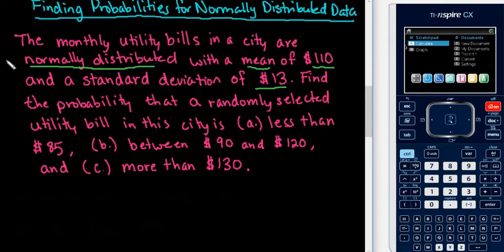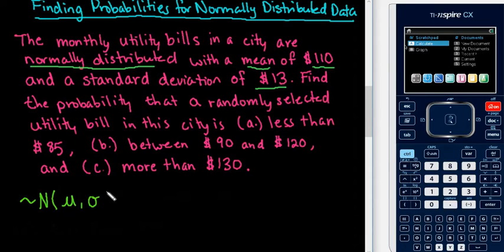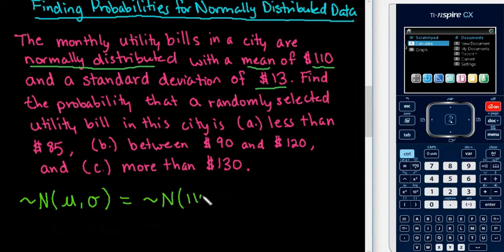The two parameters of interest that you must always have in order to use a normal distribution are the mean of the population and the standard deviation. Those are the first two things we want to identify in the problem. For this particular problem, it follows a normal model with a mean of $110 and a standard deviation of $13.